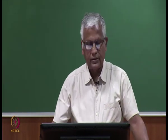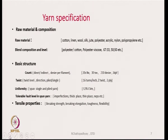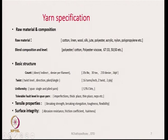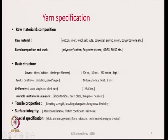Other important aspects in yarn specification include tensile properties — breaking strength, breaking elongation, toughness, and flexibility. Surface integrity is also relevant: abrasion resistance, frictional coefficient, and hairiness. Other special specifications could be whether it is a moisture management type of yarn, flame retardant, resin treated, or enzyme treated. Based on these points, the yarn specification is made, or when buying yarn from a vendor, actual values can also be specified.